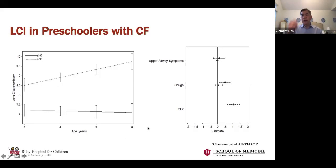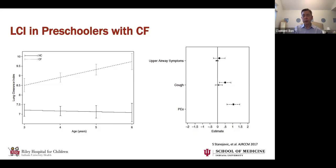Very interesting from that study is that you can use LCI to differentiate between a pulmonary exacerbation and other respiratory symptoms. The figure shows LCI distribution in three situations: children presenting with only upper airway symptoms, a cough not deemed a pulmonary exacerbation, and true pulmonary exacerbation. In the pulmonary exacerbation kids, LCI was significantly higher compared to the non-exacerbation cases, suggesting that LCI could differentiate true lower respiratory tract worsening from other causes of cough.